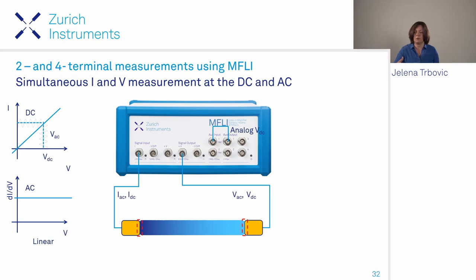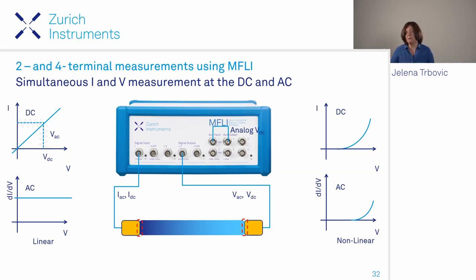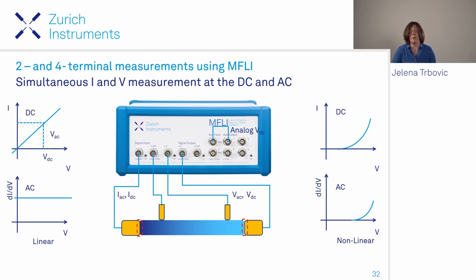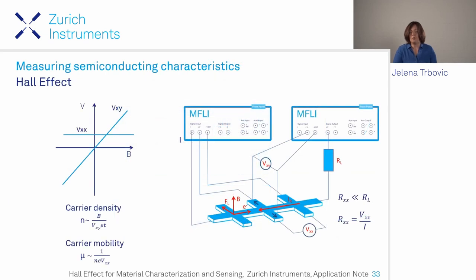A linear ohmic system gives a straight IV curve; with small AC excitation the lock-in measurement shows a straight line. Contact problems appear as nonlinear IV characteristics and nonlinear AC measurements with higher harmonics. Four-terminal measurements can be done simultaneously to exclude contact contributions.